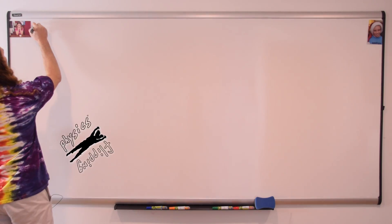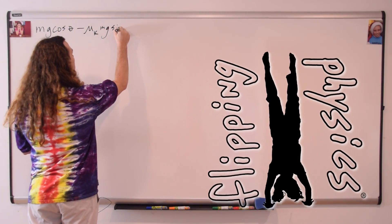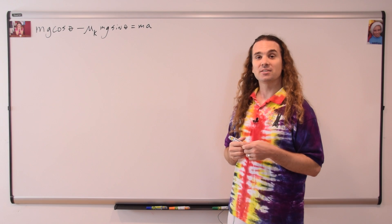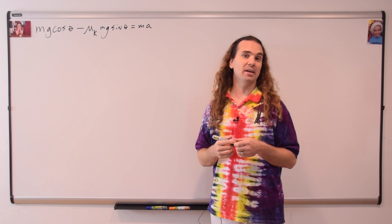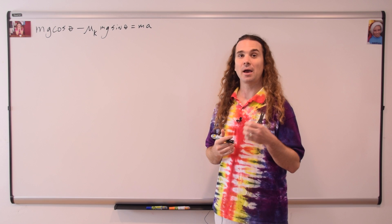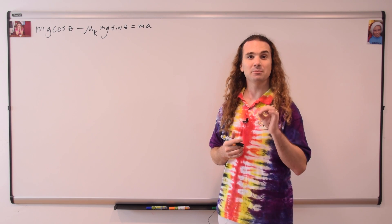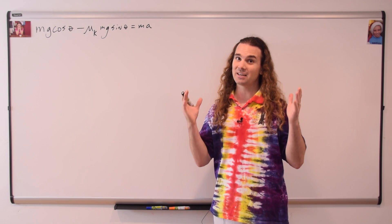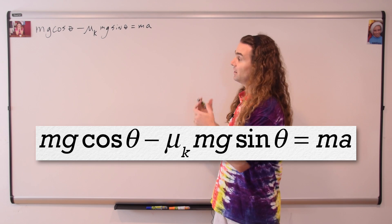Mr.p. Good morning. Flippin' physics! Mass times the acceleration due to gravity times the cosine of theta minus the coefficient of kinetic friction times mass times the acceleration due to gravity times the sine of theta equals mass times acceleration. That is our equation.